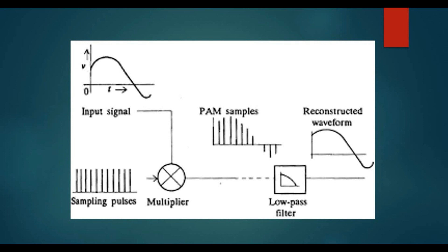Pulse amplitude modulation is the simplest form of modulation and forms an excellent introduction to pulse modulation in general. In a PAM pulse modulation system, the signal is sampled at regular intervals and each sample is made proportional to the amplitude of the signal at the instant of sampling.